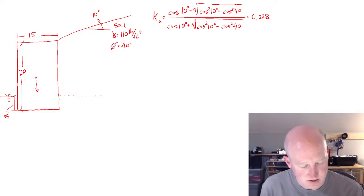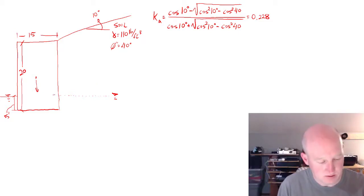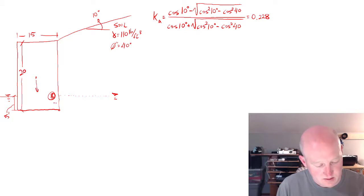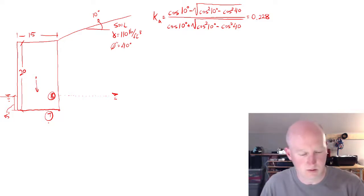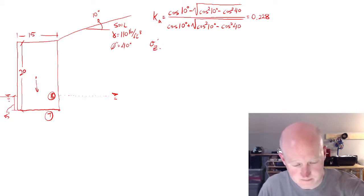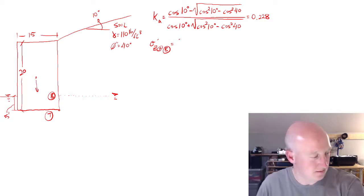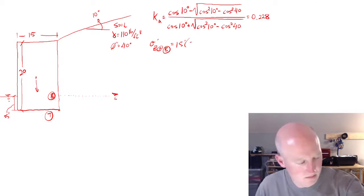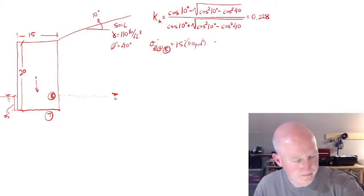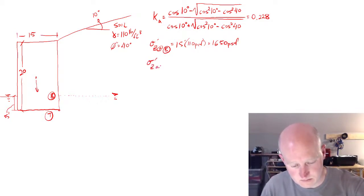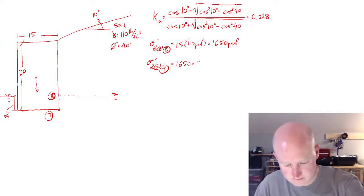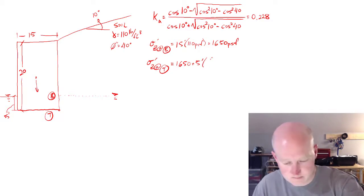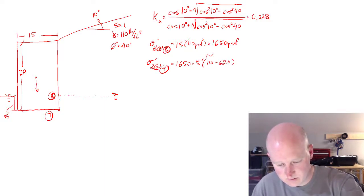The water table is the same on both sides of the wall. We identified location B and location T. To calculate the active pressure, we first need to calculate the vertical pressure at those particular points — specifically the vertical stress at B and the vertical stress at T. Here we're using the effective unit weight.